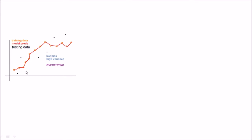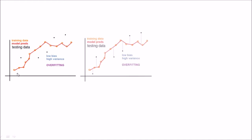Just imagine that after training the model, we find that the relationship follows this red-colored squiggly line — that is the prediction line. When I try to test my test data on this, I see that there is a huge difference between the predicted value and my actual value in most of the cases.